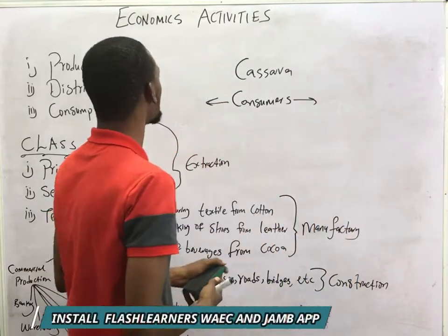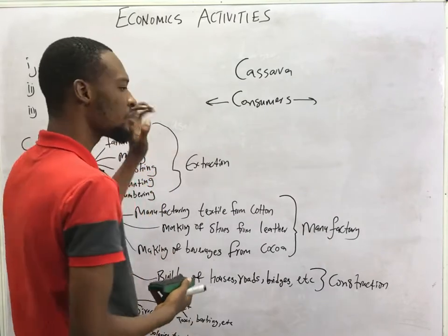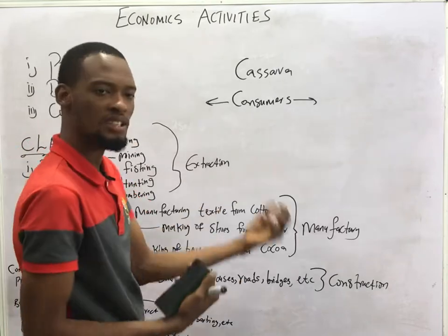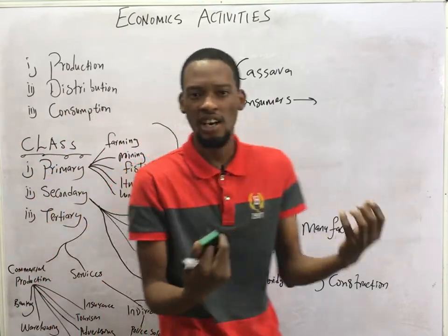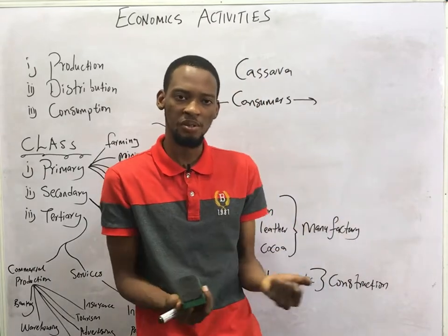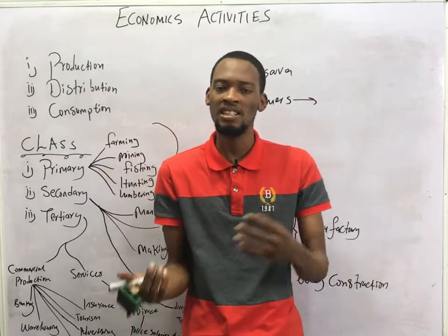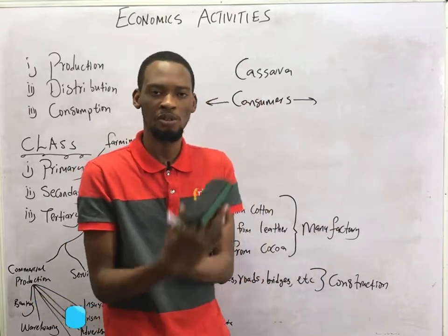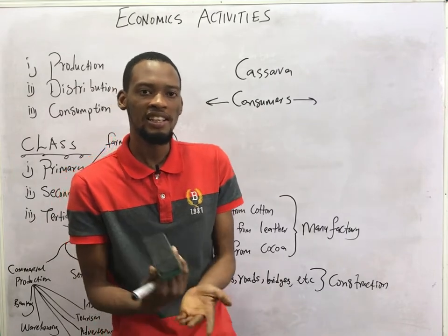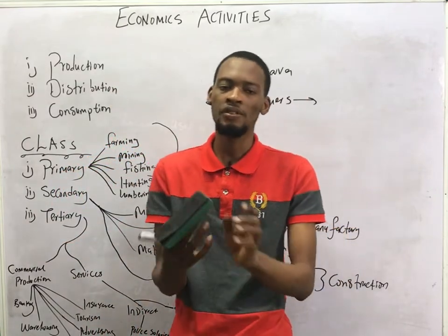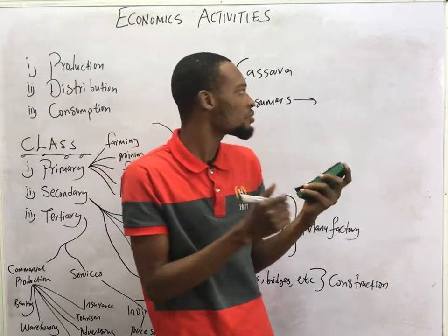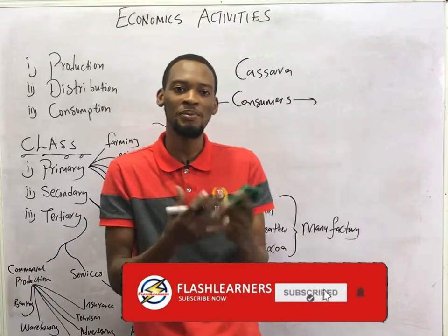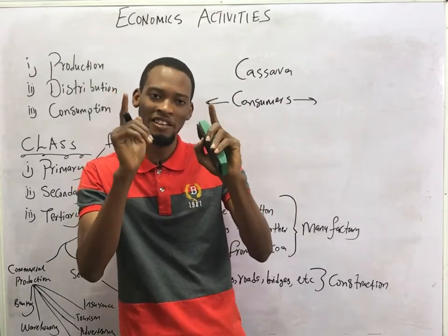In summary, economic activities are production, distribution, and consumption, and they are classified into three groups: primary, secondary, and tertiary activities. Primary activities deal with extraction of raw materials from land, sea, and so on. Secondary activities deal with manufacturing and construction. Tertiary activities deal with commercial activities and the rendering of services. That's what you need to know under economic activities. Thanks for watching — subscribe to this channel and check out my other videos.